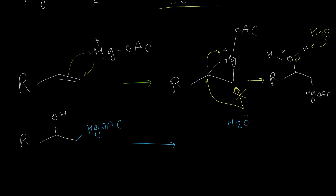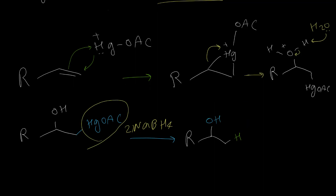To remove mercury from this molecule, we need to use sodium borohydride in the second step of this reaction. Sodium borohydride replaces the mercury group with hydrogen atoms, and the final product is an alcohol with OH on the Markovnikov position.